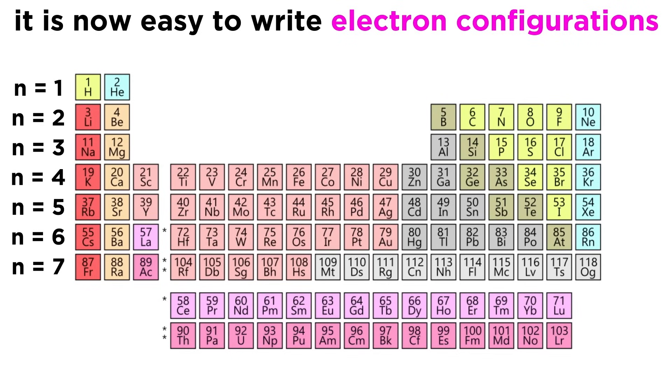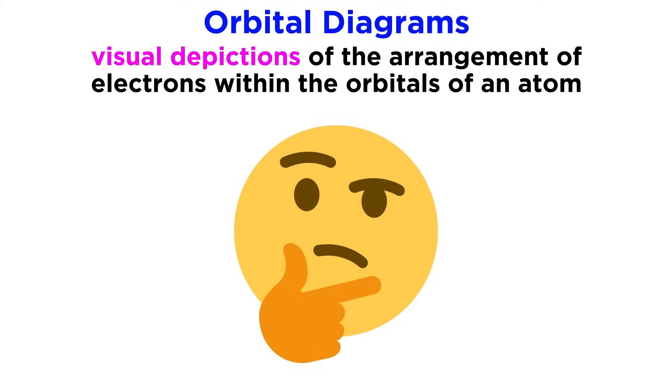This will make it much easier for us to assign electron configurations to any atom. As we begin to explicitly write out electron configurations, let's also learn how to draw orbital diagrams, because the ability to visualize orbital diagrams will make the electron configurations of an atom more than just a set of letters and numbers. It will allow us to visualize the arrangement of electrons within an atom. That's what orbital diagrams are. They are visual representations of electron configurations, showing each individual orbital and the number of electrons inside them.